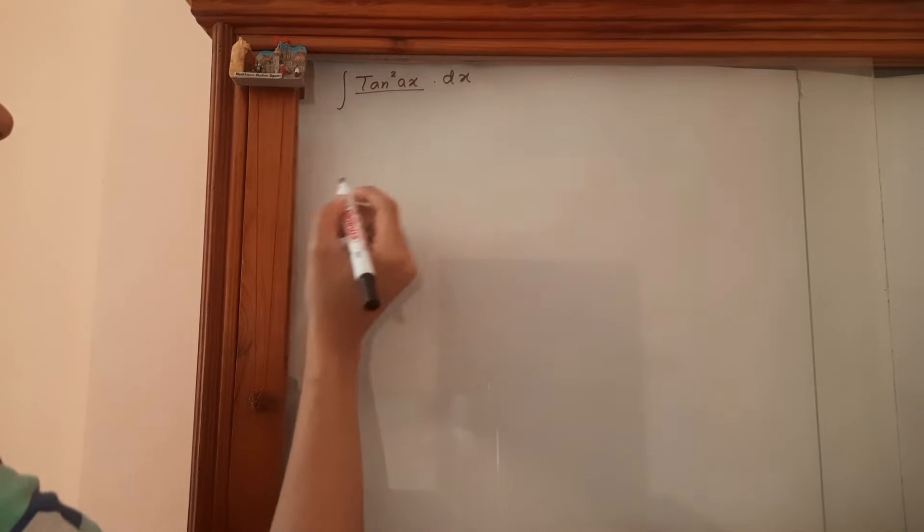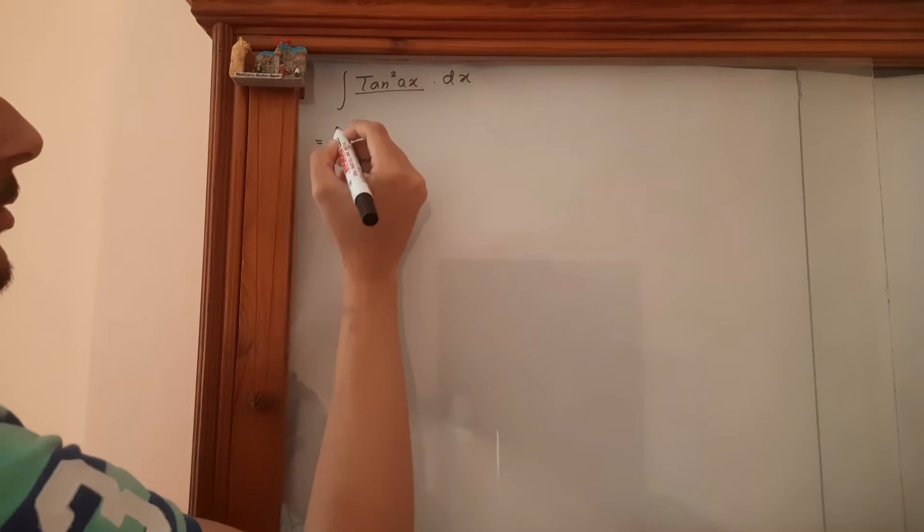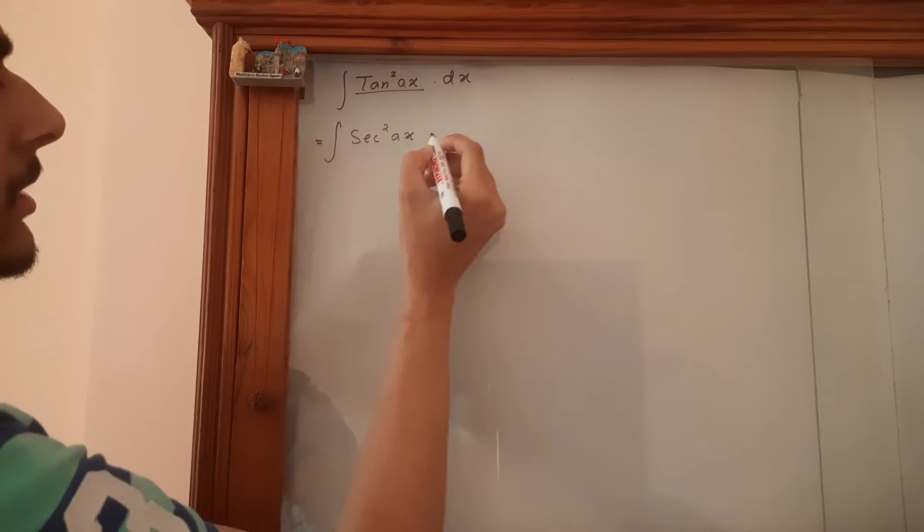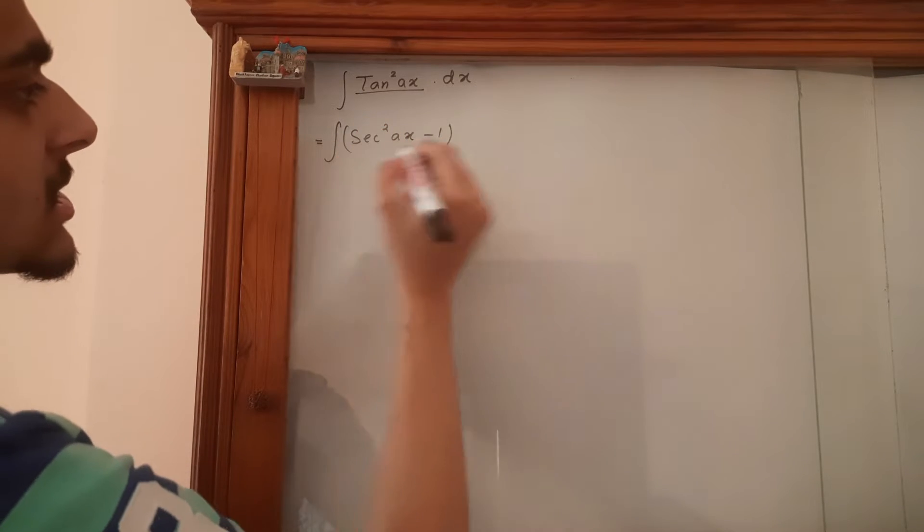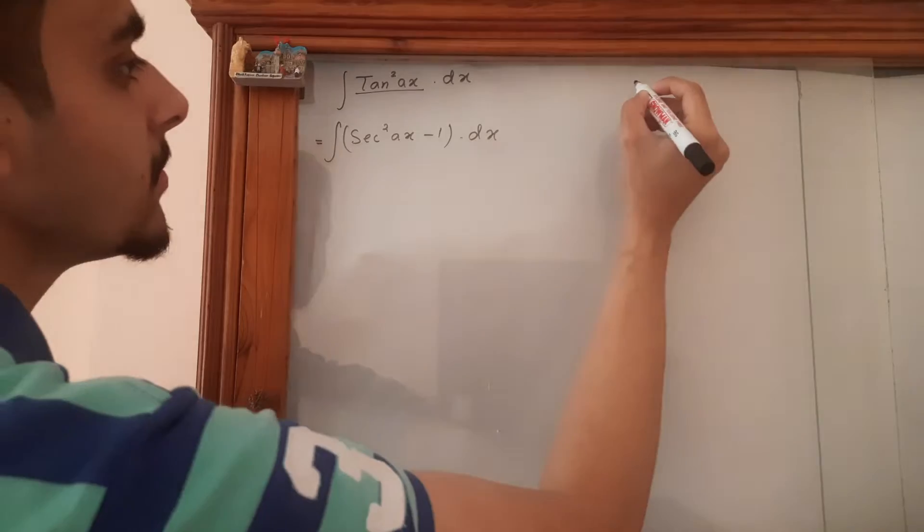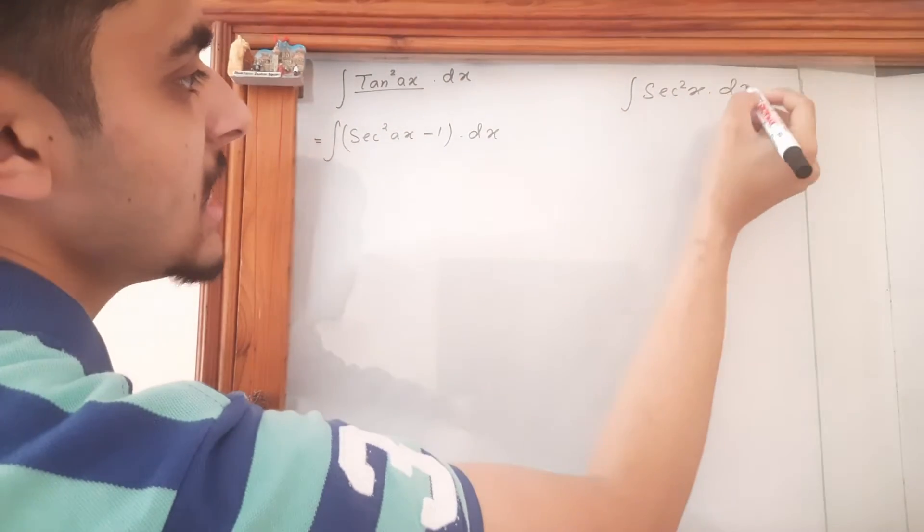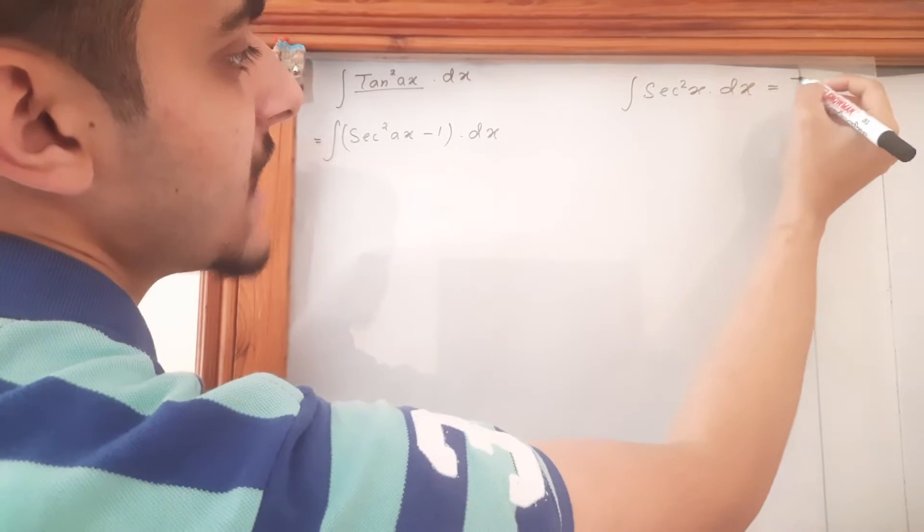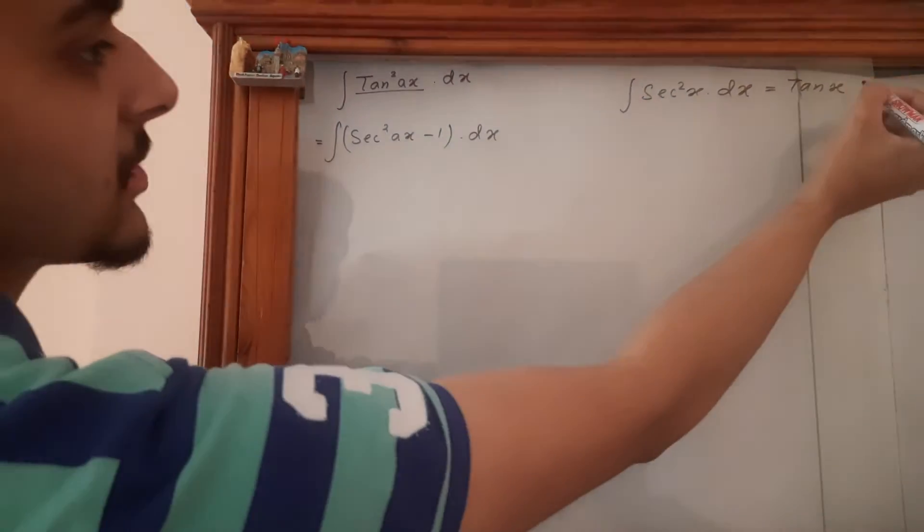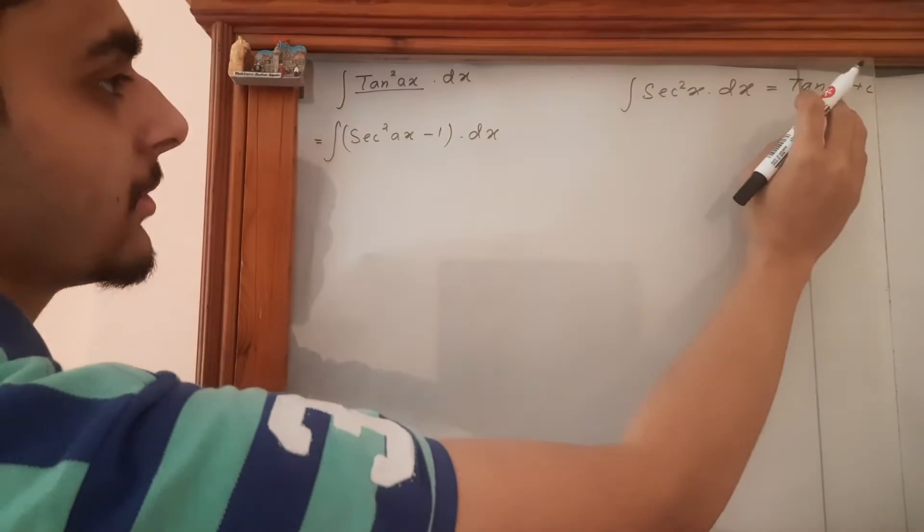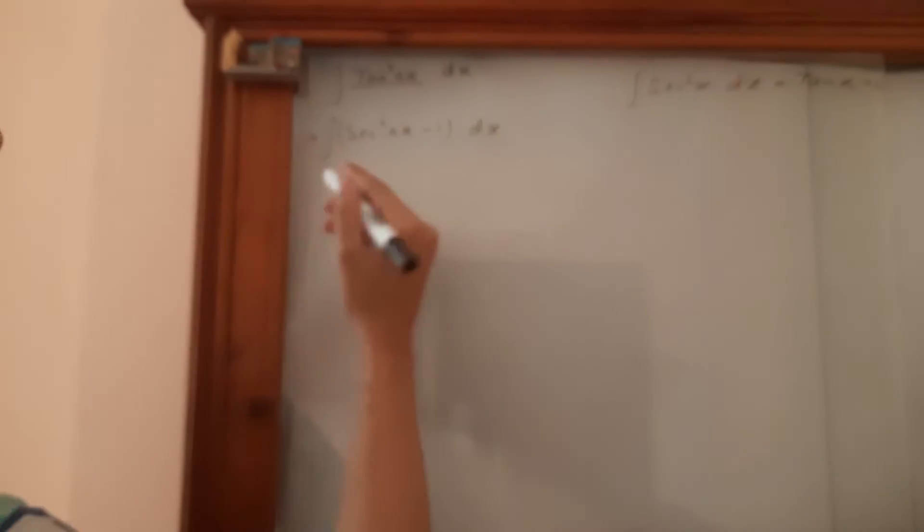So let's change this in terms of sec square x. And the reason I'm doing so is because we already know this formula: integral of sec square x dx is equal to tan x, plus of course the integration constant. So we can change this in form of this and easily get the answer.